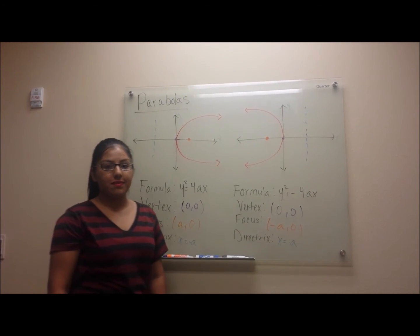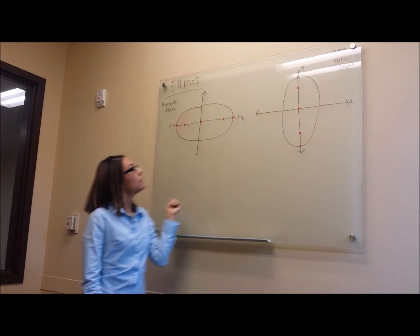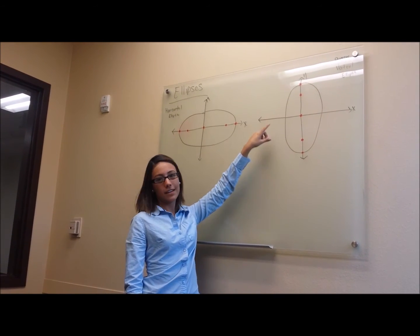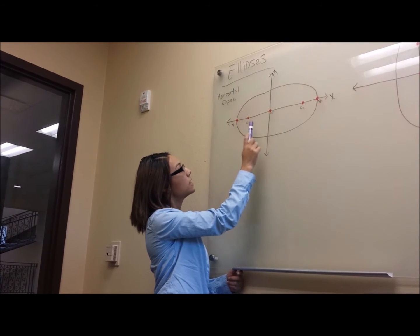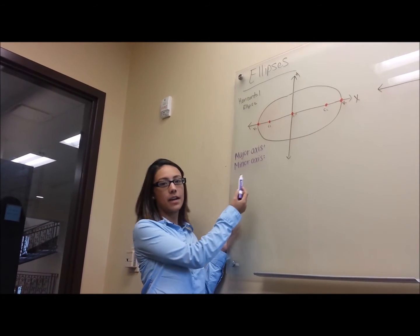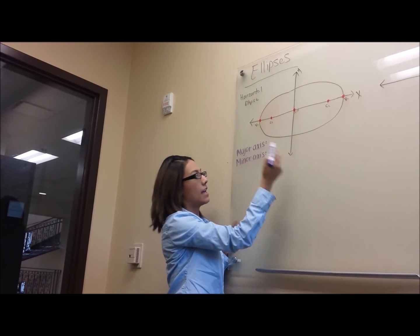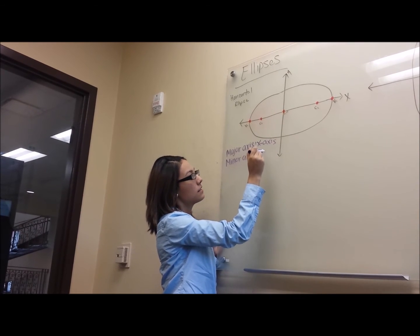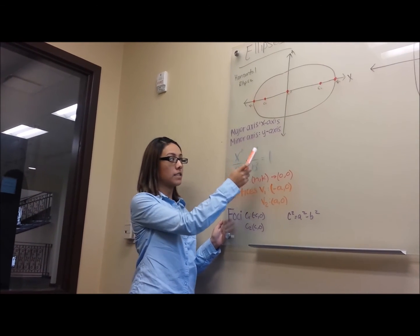Those are the graphs for the parabolas and their components. Now we're going to talk about ellipses. We have two types of ellipses: horizontal ellipse and vertical ellipse. You can remember the horizontal ellipse by looking at it — it looks short and fat. And for the vertical ellipse, it's tall and skinny. First we're going to start with the horizontal ellipse. This is how it looks on the x and y-axis. The red dots are its critical points. Now let's look at the major components of the horizontal ellipse. We're going to start with the major and minor axis. The major axis is the longest diameter of our ellipse — in this case it's the x-axis. And our minor axis is the shortest diameter, so in this case it's the y-axis.